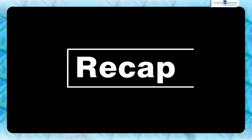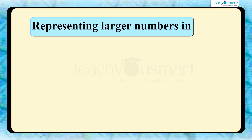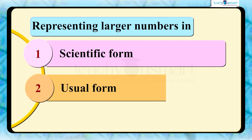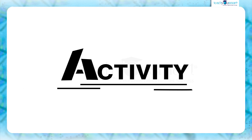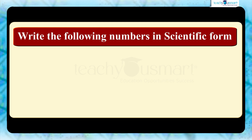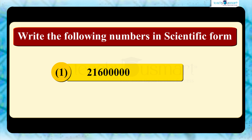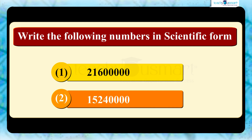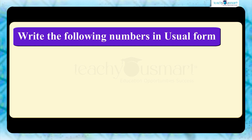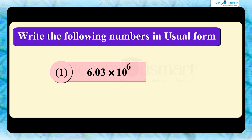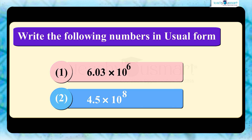Let's recall what we discussed today: representing large numbers in scientific form and usual form. Before winding up, let's check how much you understood with an activity. Write the following numbers in scientific form: first, 216,000,000; second, 152,400,000. Write the following numbers in usual form: first, 6.03 multiplied by 10 raised to 6; second, 4.05 multiplied by 10 raised to 8.